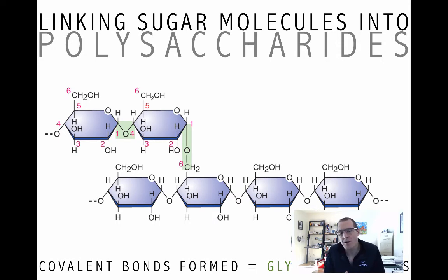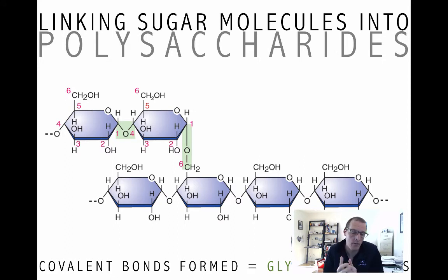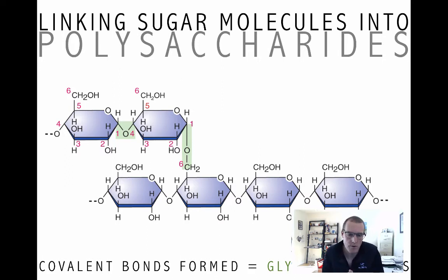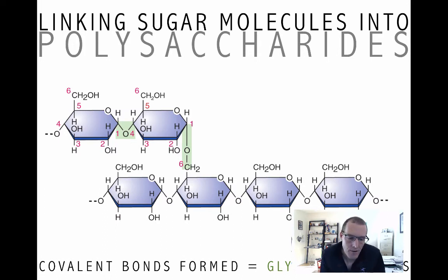Starch is a branched polysaccharide. And if you look at glycogen — which is your storage polysaccharide; starch is a plant's storage polysaccharide — glycogen is really, really highly branched. We'll talk about the relationship between structure and function in a moment. But these are branched polysaccharides.